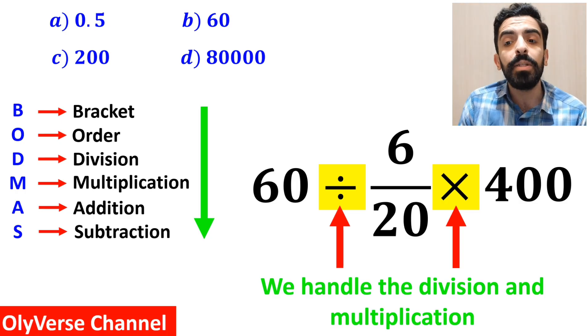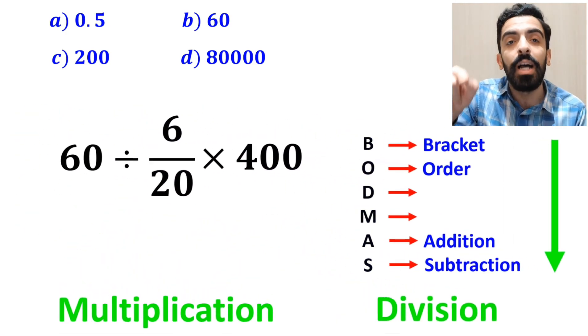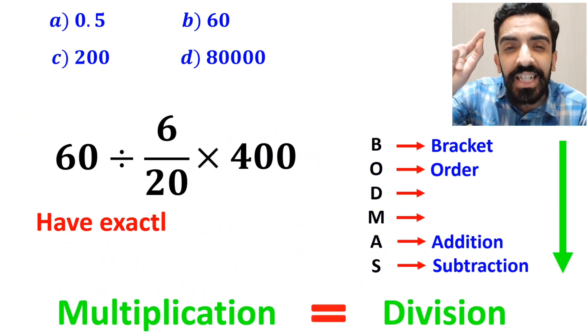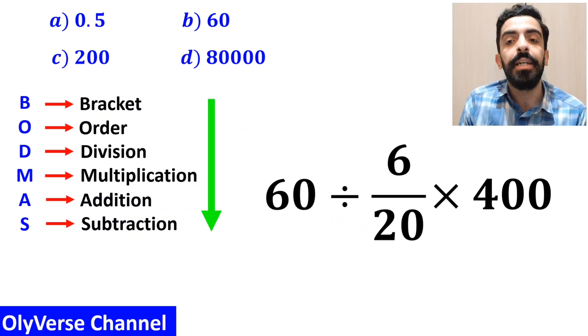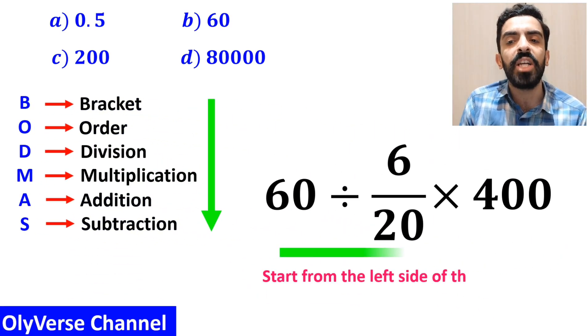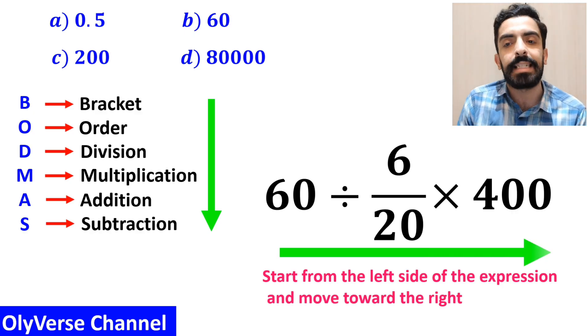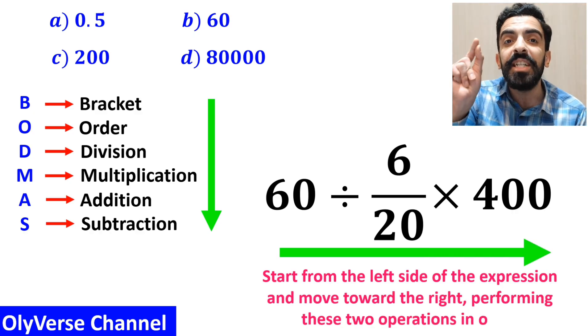However, it's very important to note that in the BODMAS rule multiplication and division have exactly the same level of priority. In this situation the best thing to do is to start from the left side of the expression and move toward the right, performing these two operations in order.